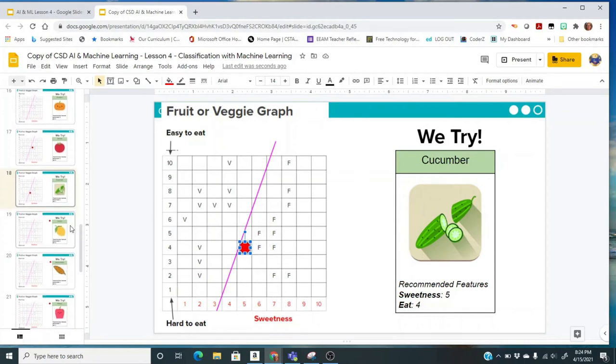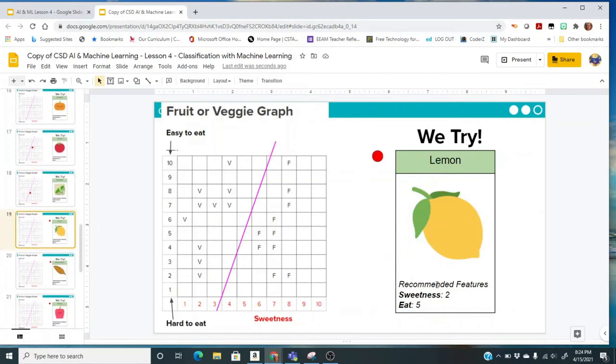Let's go to the next one. We're going to do a lemon. This one has sweetness as 2. Lemons are not very sweet. And for eating, it has a 5. So I'd come over here and it's going to put my lemon as a vegetable.